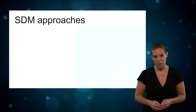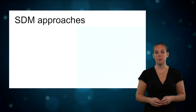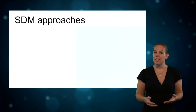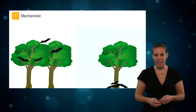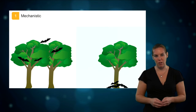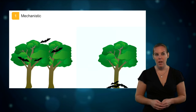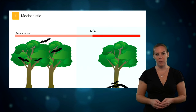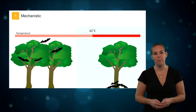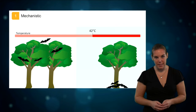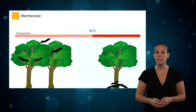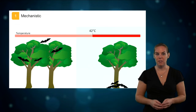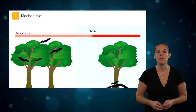There are two approaches you can take in estimating species distributions. You can either use a mechanistic model, which specifically incorporates known species tolerances to environmental conditions, such as the maximum temperature in which a species can survive. This requires detailed data on the physiological response of a species to environmental factors, and this data is often not available.